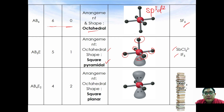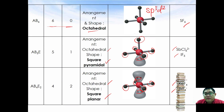Last but not least, if there are two lone pair electrons and four surrounding atoms, the arrangement is similar to octahedral but the shape is square planar. Examples are XeF4 and BrF4-.